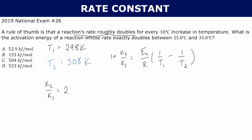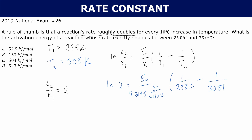We know that the natural log of 2 is equal to Ea over R, where R is 8.3145 joules per mole times Kelvin, times 1 over T1 — T1 is 298 Kelvin — minus 1 over T2, which is 308 Kelvin.